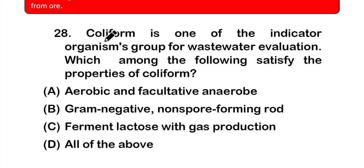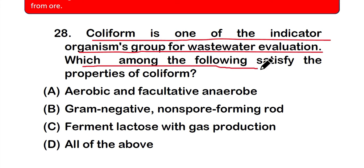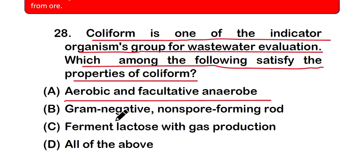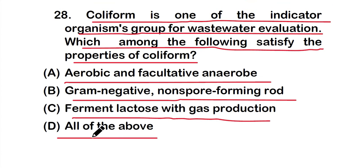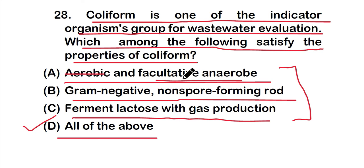Question number 28: Coliform is one of the indicator organism groups for wastewater evaluation. Which among the following satisfy the properties of coliform? Options: A) aerobic and facultative anaerobic, B) gram-negative, non-spore forming rod, C) ferment lactose with gas production, or D) all of the above. The right answer is option D — all of the above. Coliforms are facultative anaerobic, gram-negative, non-spore forming rods that ferment lactose with gas production.